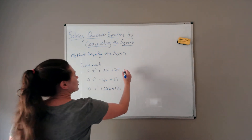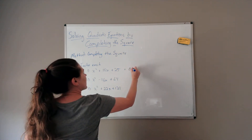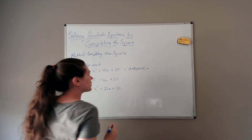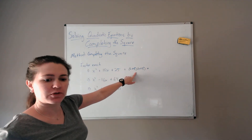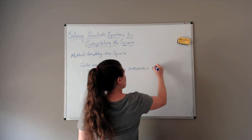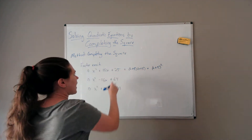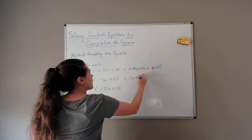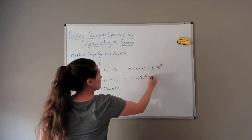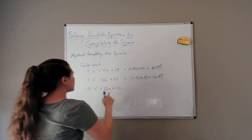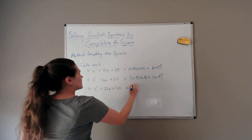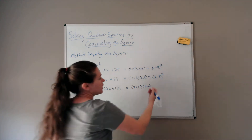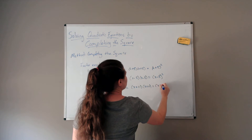These three expressions: the first one factors to be x plus 5 times x plus 5, which I can simplify as x plus 5 squared — it's the same factor twice. The second one is x minus 8 times x minus 8, or x minus 8 squared. The last one is x plus 11 times x plus 11, which can be written as x plus 11 squared.